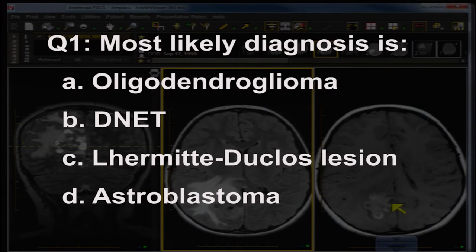Question 1: The most likely diagnosis is — A. Oligodendroglioma. B. D-net. C. Lhermitte-Duclos lesion. D. Astroblastoma.